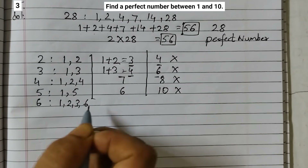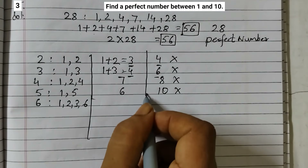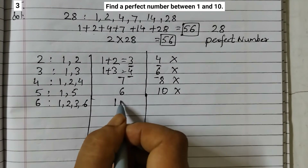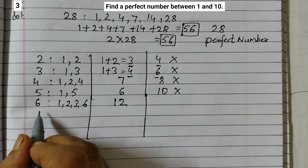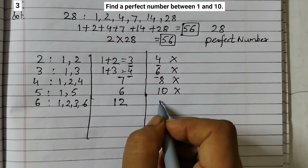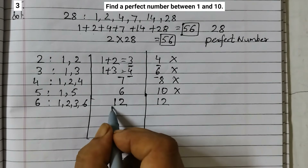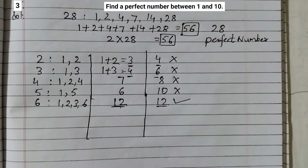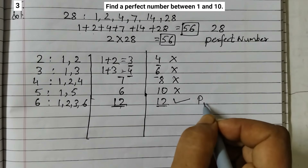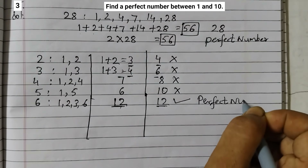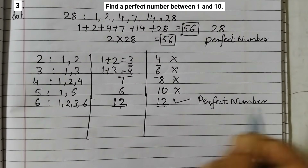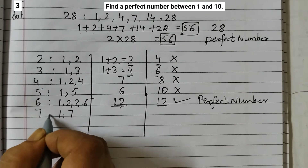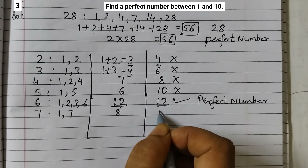Factors of 6: 1, 2, 3, and 6. When we add these factors: 1+2+3+6=12. And twice the number = 2×6=12. The sum is 12 and twice the number is also 12 — so 6 is a perfect number!